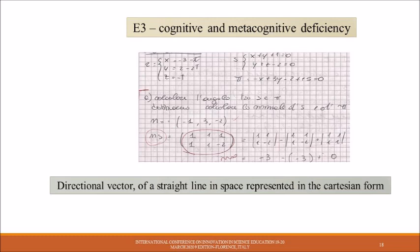Cognitive and metacognitive deficiency—this kind of error can be caused by construction of conceptual nodes lacking from proposition and their properties. Here we see the directional vector of the straight line in space represented in Cartesian form.